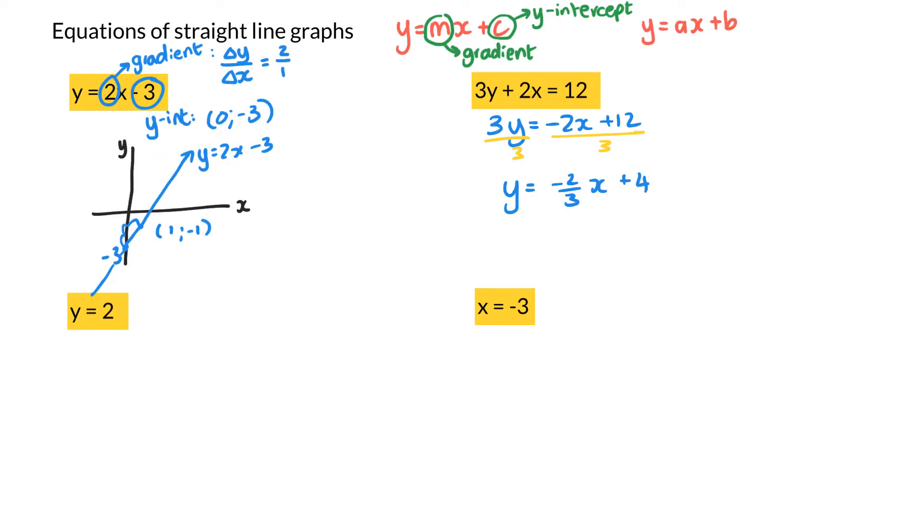So I get y equals negative 2 thirds x plus 4. So my gradient is negative 2 over 3, and my y-intercept is positive 4.